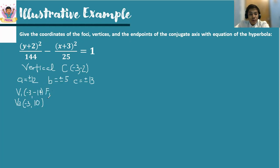We know that the foci f sub 1 and f sub 2 are collinear with the vertices, so they will share the same abscissa, which is negative 3 or the h value. In reference with c, we add and subtract: negative 2 minus 13 is negative 15, then negative 2 plus 13 is 11.